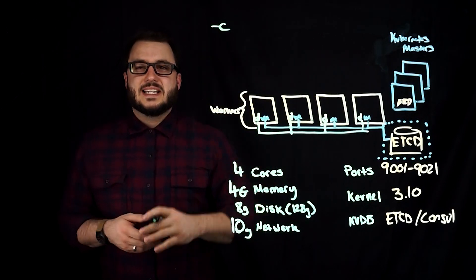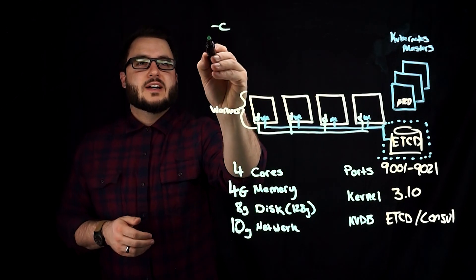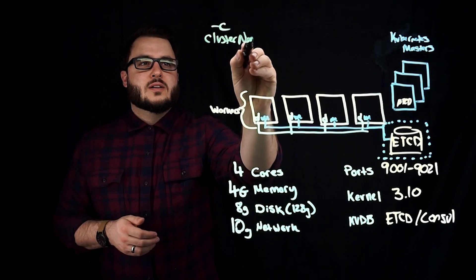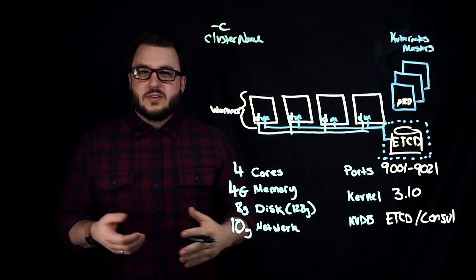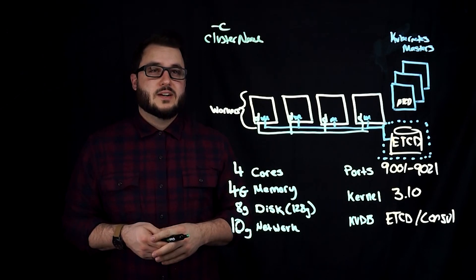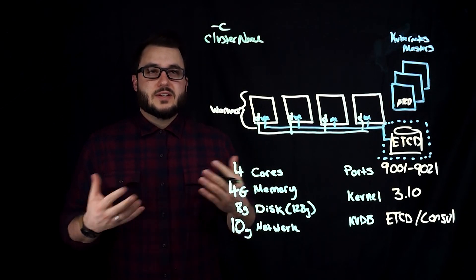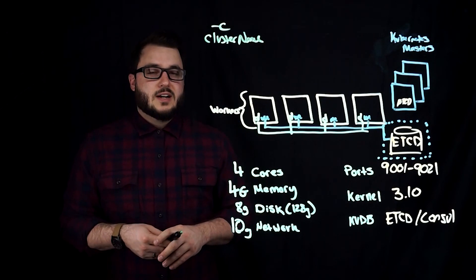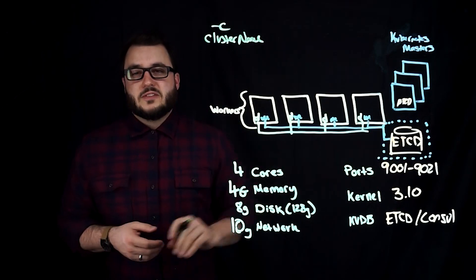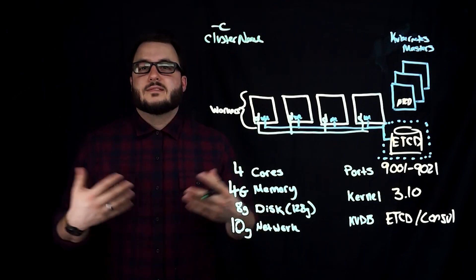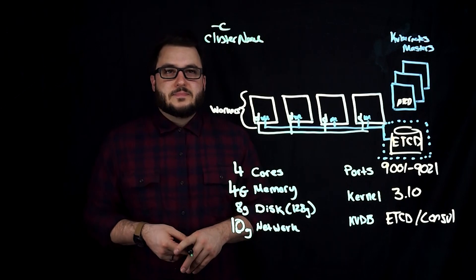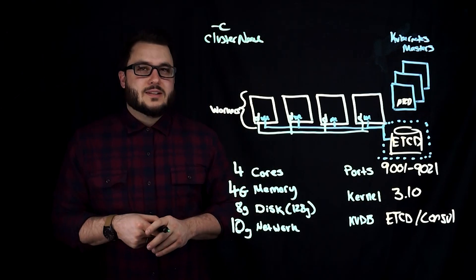Dash C is our cluster name. You can name this whatever. It's best to be unique. There is the opportunity of conflict if you spin up this application and it configures itself and you use the same name again. So just make sure that cluster name is unique. This is an important one. It is required.